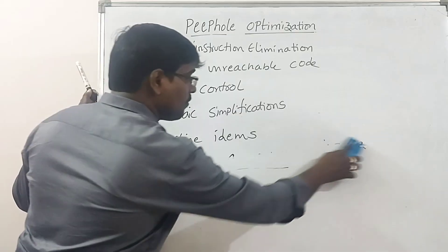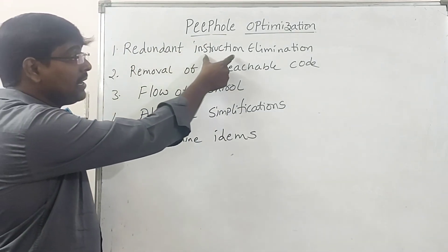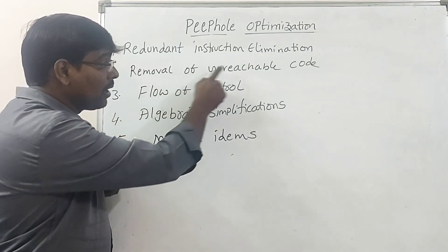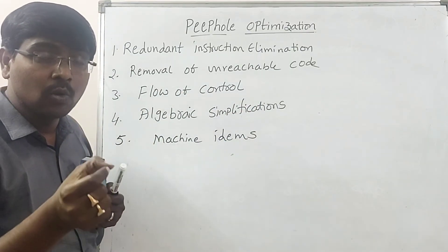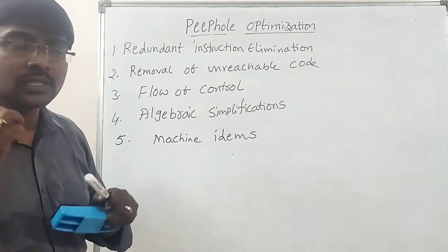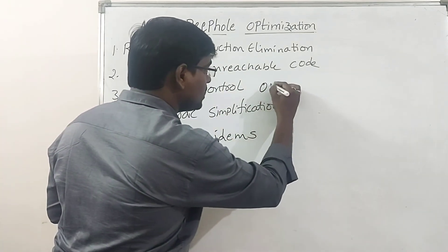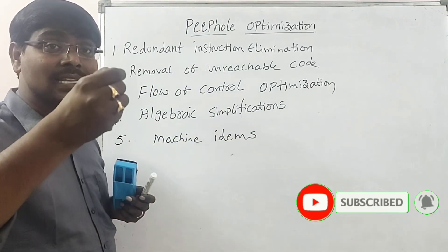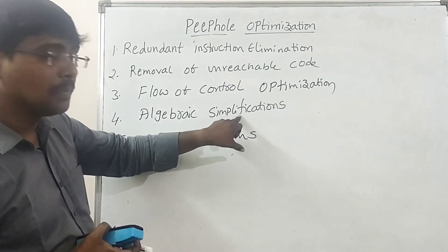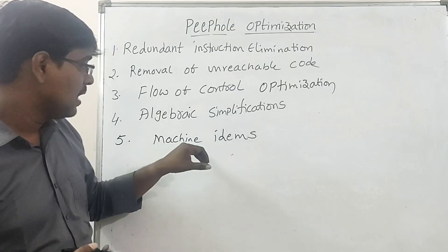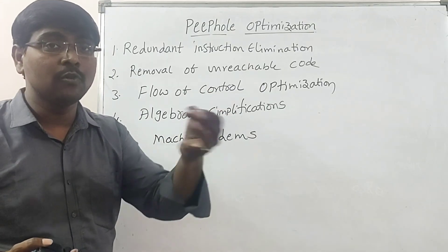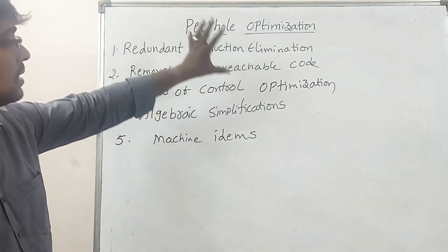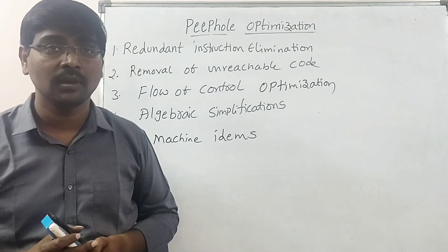These are the different techniques for Peephole Optimization. To summarize: Redundant Instruction Elimination — remove any repeated instructions; Removal of Unreachable Code — remove any code that is never executed; Flow of Control Optimization — remove unnecessary jumps; Algebraic Simplifications — remove useless operations; and Machine Idioms — replace regular code with powerful machine instructions to improve performance. Thank you.